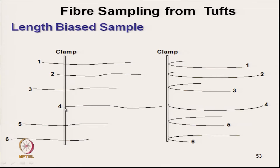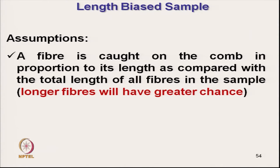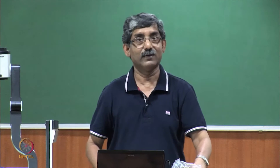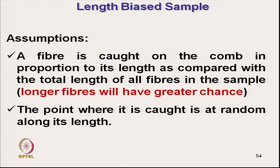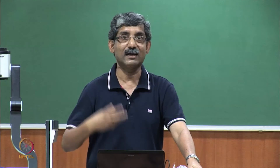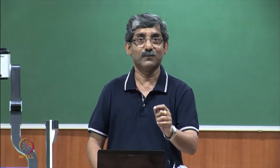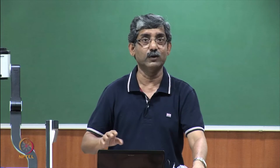There are two main assumptions. First assumption: a fibre is caught on the comb in proportion to its length as compared to the total length of all the fibres in the sample — meaning longer fibre will have greater chances. Second assumption: the point where it is caught is at random along its length. This process is used for cotton or fibres with variable length.